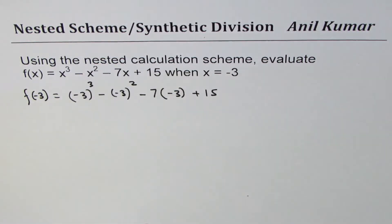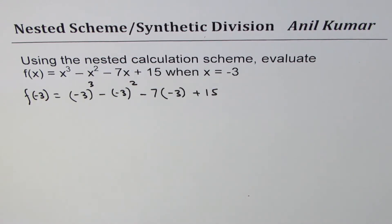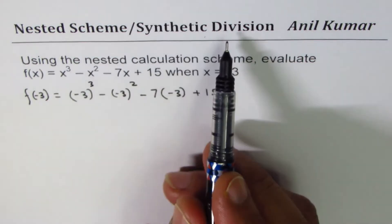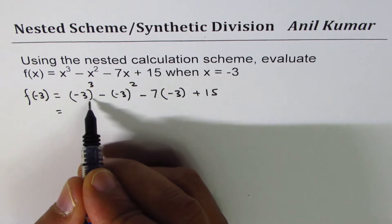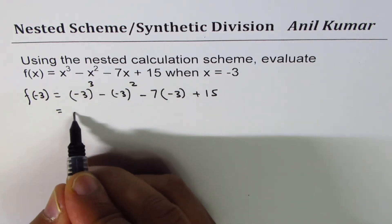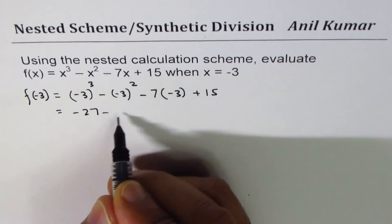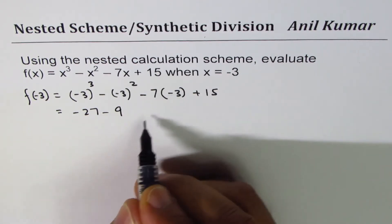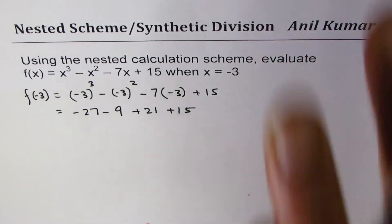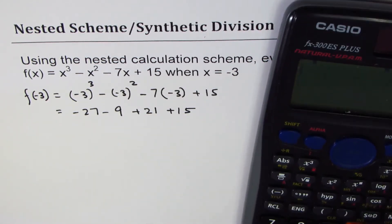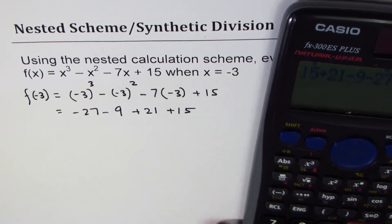In case of nested scheme, we follow a different method which is similar to synthetic division. First, let me just get this value. What we have here is (-3)³ which is -27, this is -9, this is +21, and then we have +15. Now we can add all these terms.